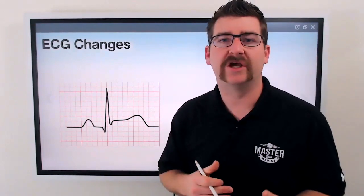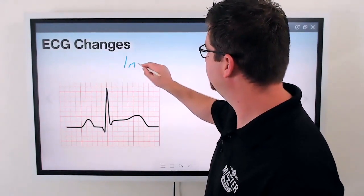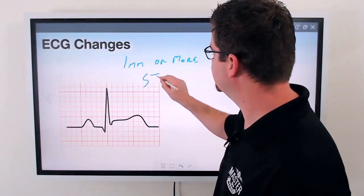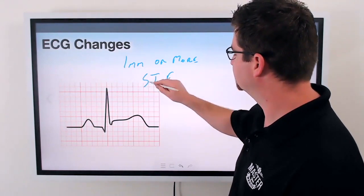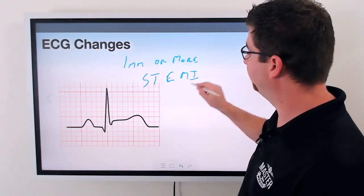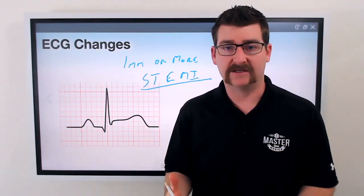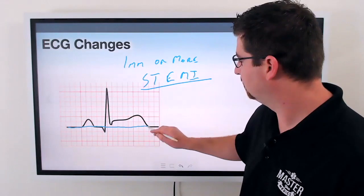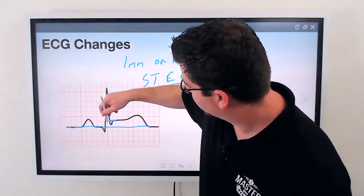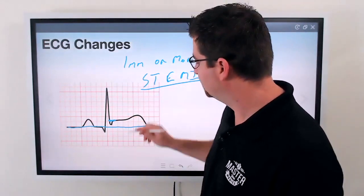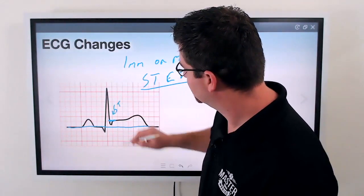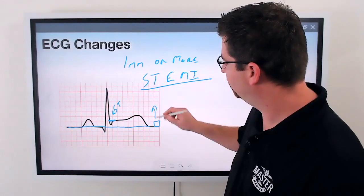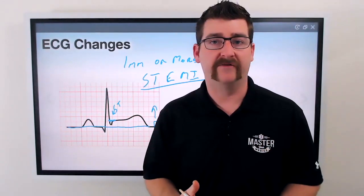The EKG changes that we will see associated with this is going to be one millimeter or more of what we call ST elevation — so, ST elevation myocardial infarction, or STEMI. If you look at this QRS, our baseline is across here, and this segment right here, where the QRS ends and the T wave begins, is called our ST segment. If we have one millimeter or more — and again, these little tiny boxes are one millimeter — that is indicative of a STEMI.